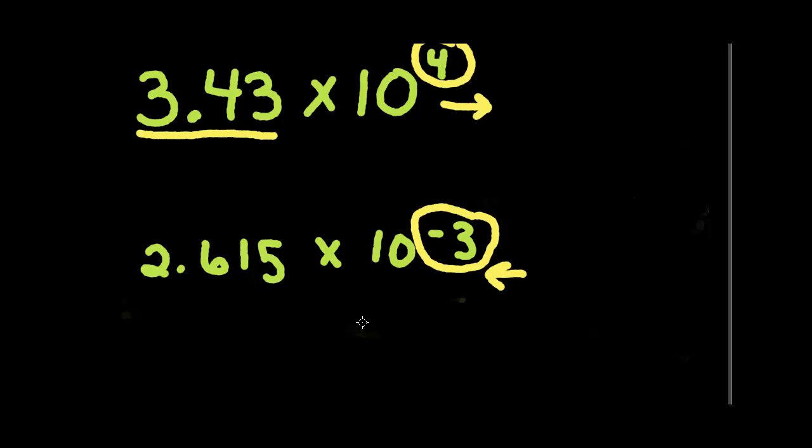So we're going to simply take that decimal point here and we're going to move that many points in the direction which this value here, the power of the 10, tells us to do. And if we don't have a number to move to, we're going to add a zero as a placeholder.